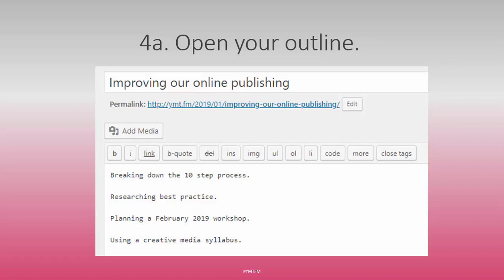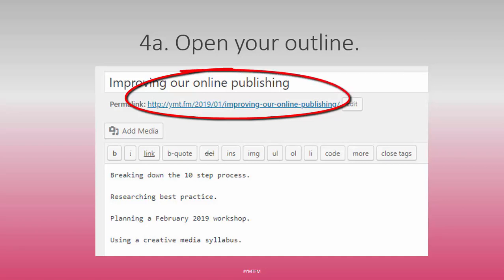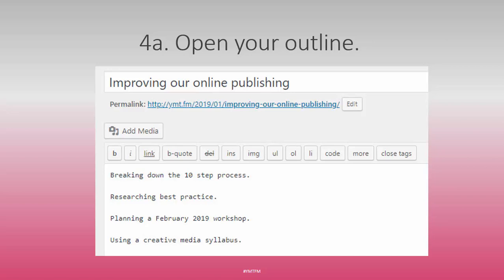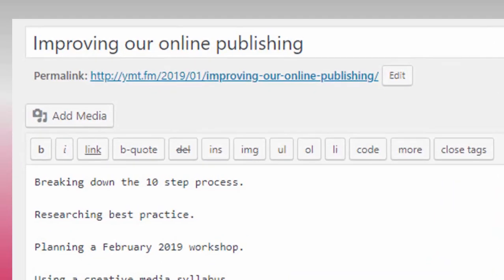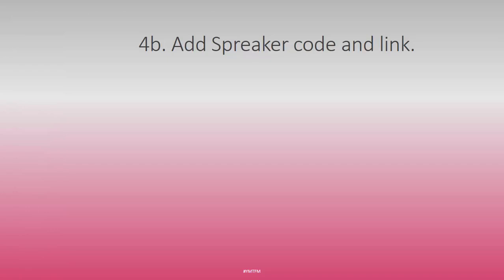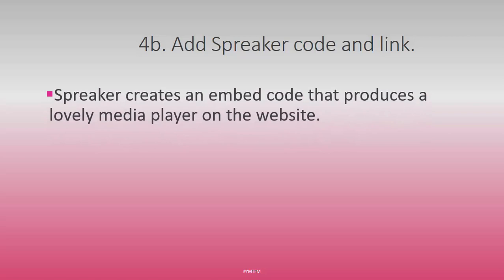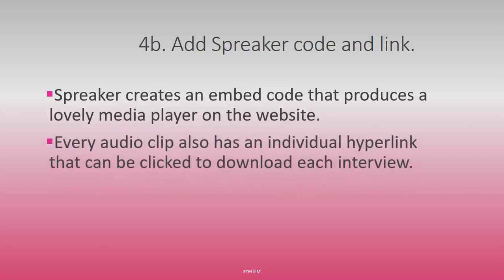Open up your outline. You can see an outline for a blog post that points back to what you're hearing right now — improving our online publishing, four main topics. Break it down, research it, plan it, and then use your creative media syllabus to guide the steps. Add your Spreaker code to the outline and to the link, so you have a Spreaker embed code and a link in the blog post. Spreaker itself creates these two pieces of information: the direct hyperlink and the embed code.